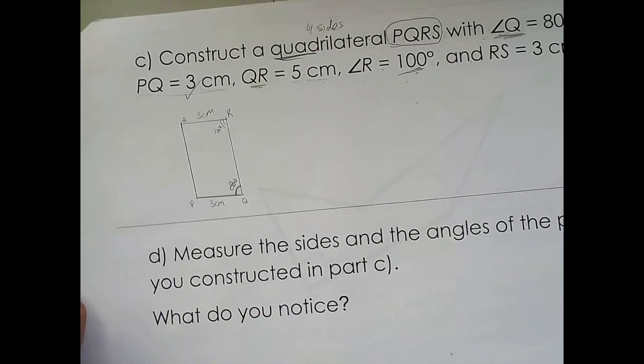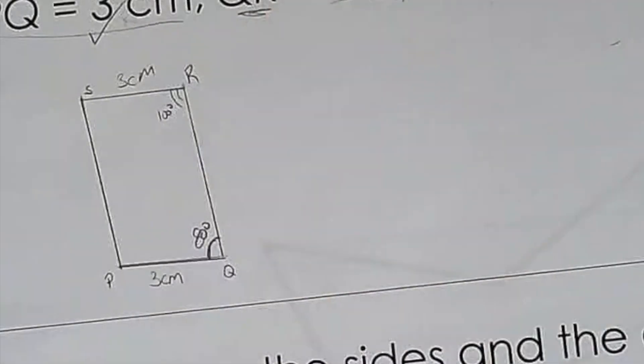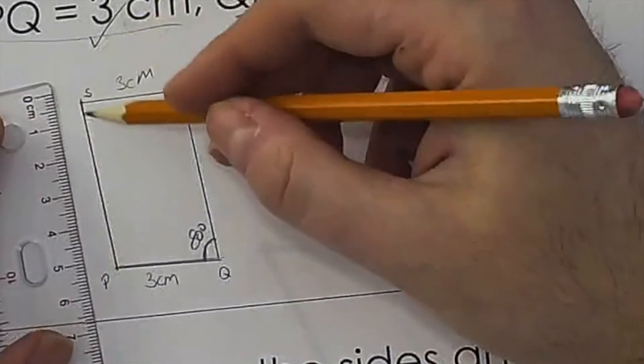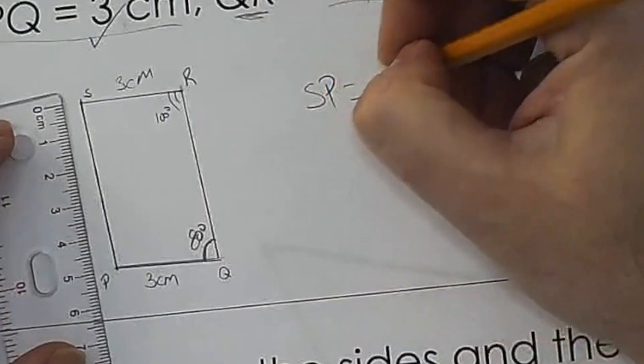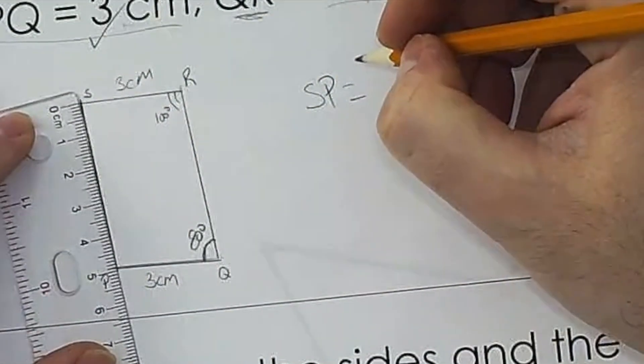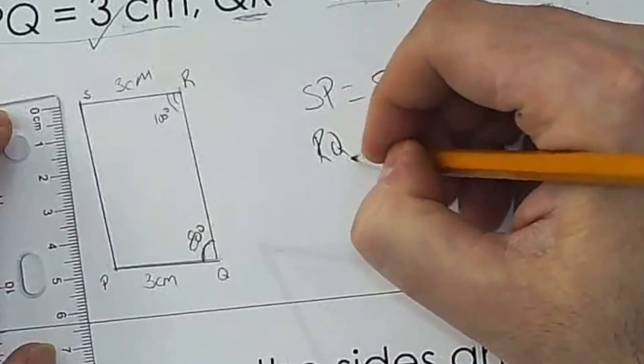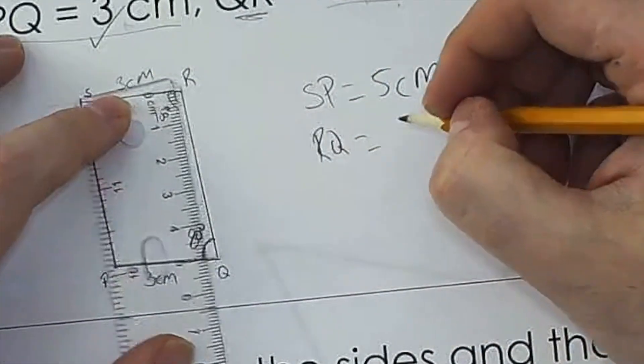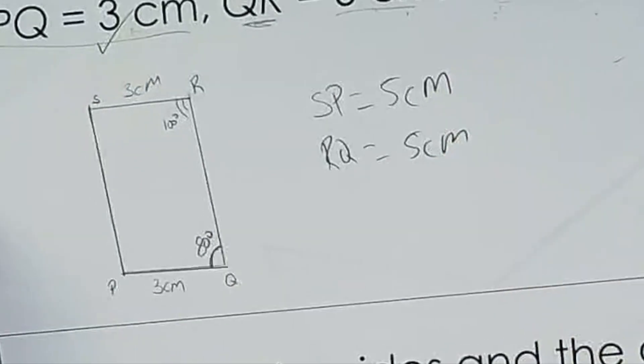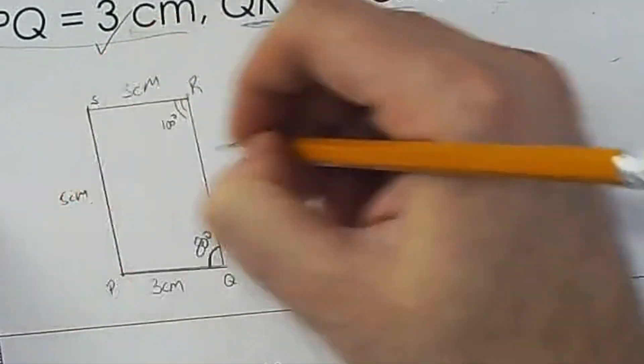What do you notice? Well, you're going to notice that these sides here, SP, is about 5 centimeters. RQ, or QR doesn't matter, is also 5 centimeters.